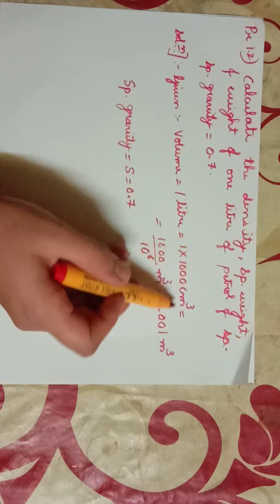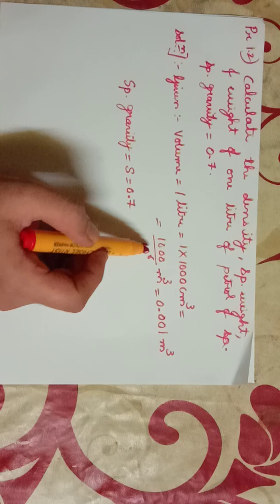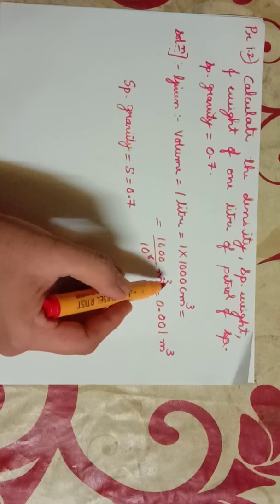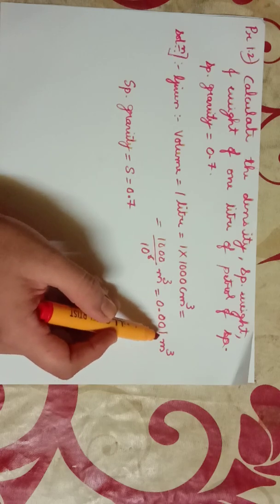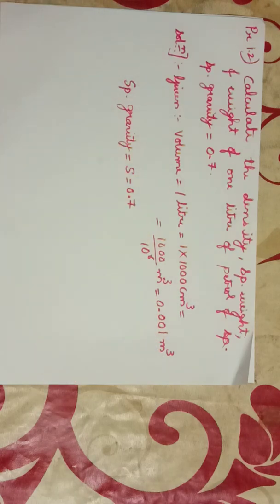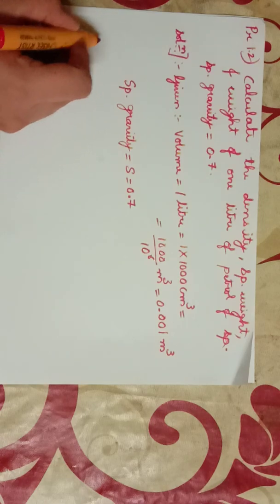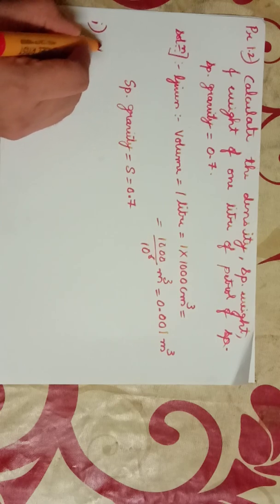That is 1 times 1000 centimeter cube, and then 1000 divided by 10 to the power 6 meter cube, that will be equal to 0.001 meter cube. Specific gravity is given as 0.7, and we have to find density.